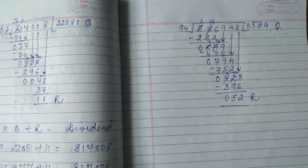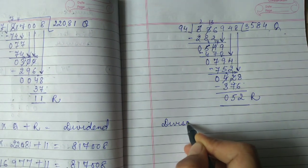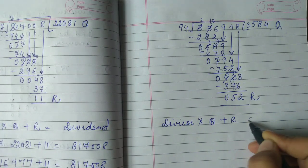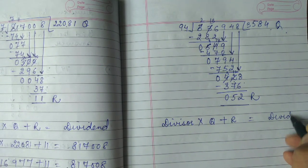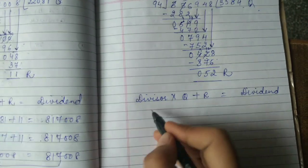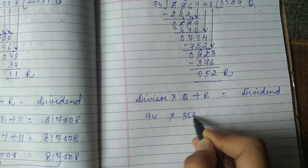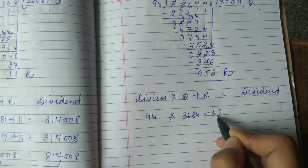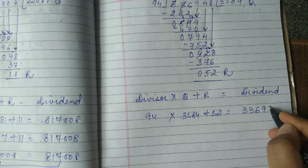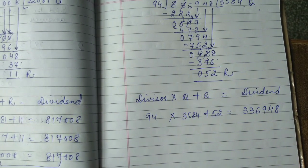Now verify: divisor multiplied by quotient plus remainder should equal the dividend. Divisor is 94, multiplied by quotient 3,584, plus remainder 52, should equal the dividend 3,36,948. Solve it and get your answer.